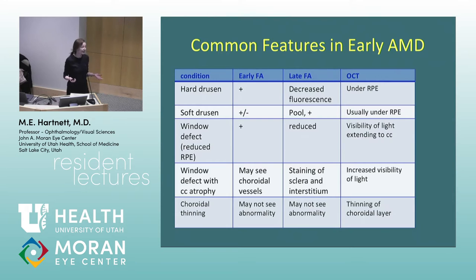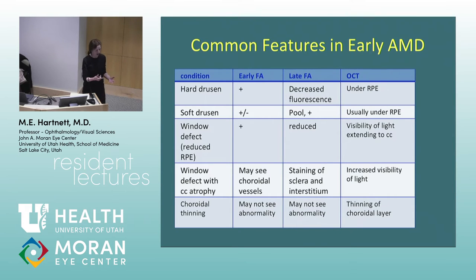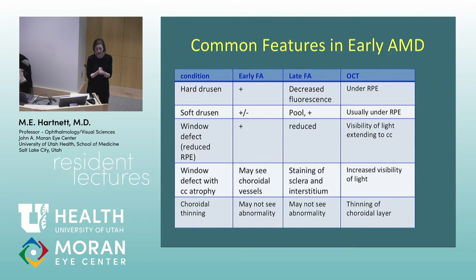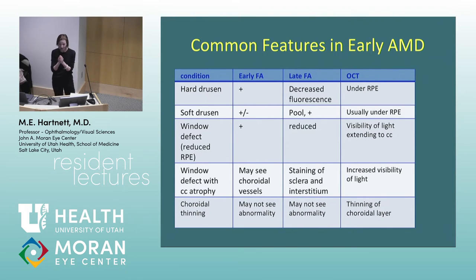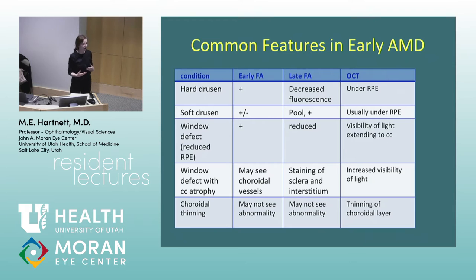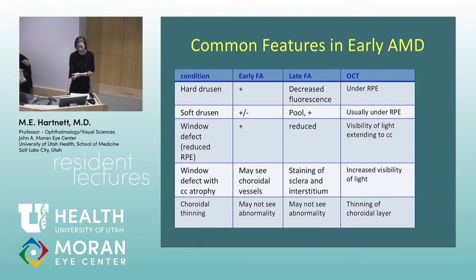Fluorescein angiography teaches us a lot about what's going on in the eye. When you inject the dye, the choroid is perfused first via the ophthalmic artery — you can still see a cilioretinal artery early because it's really fed by the choroid. The retina starts to pick up fluorescence around 10 to 12 seconds.